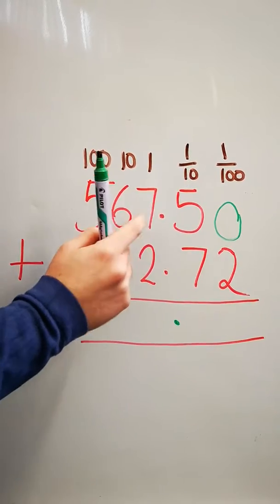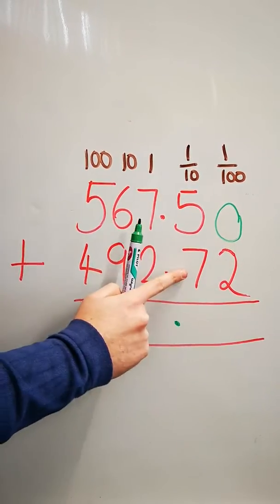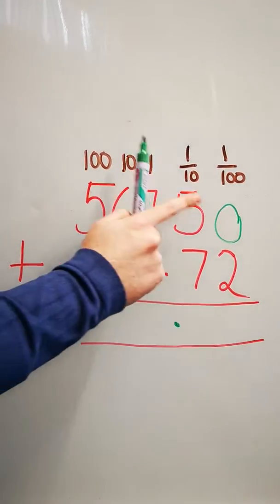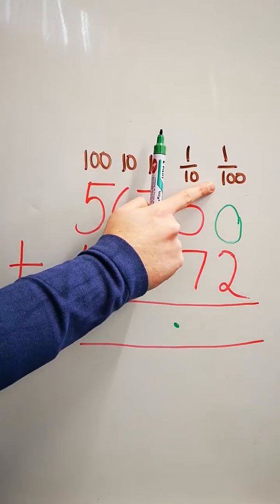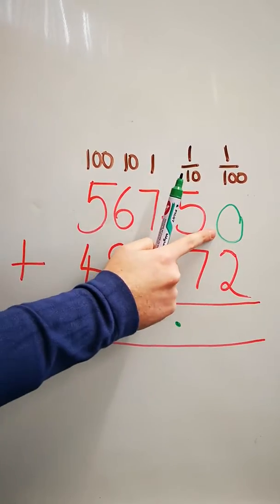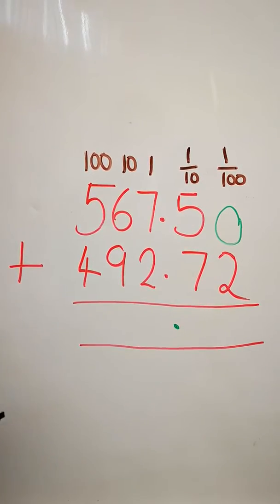That's right, it's a tenth. I've got five tenths here, seven tenths there. And my final column is my hundredths value. I've got zero hundredths and I've got two hundredths down here.